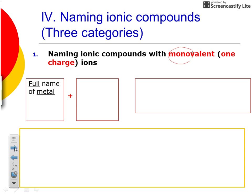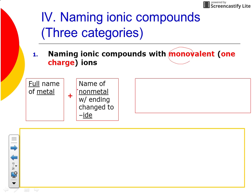The way that we name these compounds is you give the full name of the metal. Then for the non-metal, you take the root name of the non-metal and add the ending -IDE. So you change the ending to -IDE. For example, fluorine changes to fluoride, chlorine changes to chloride, and iodine changes to iodide.